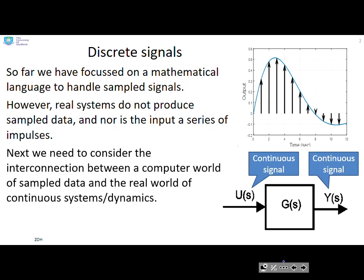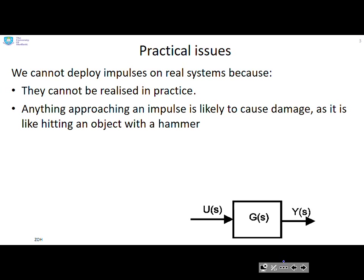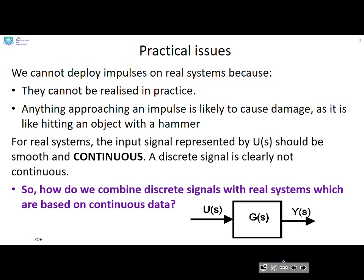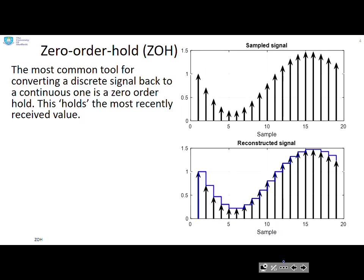What we need to do next is consider the interconnection between a computer world with sampled signals and a real world with continuous systems and dynamics. Some practical issues: we cannot deploy impulses on real systems because they cannot be realized in practice, and anything approaching an impulse is likely to cause damage — it's like hitting an object with a hammer. For real systems, the input signal u(s) should be smooth and continuous, and a discrete signal is clearly not continuous.